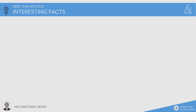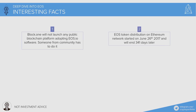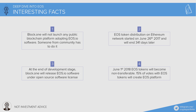Some interesting facts from the EOS FAQ. Block.one will not launch any public blockchain platform adopting EOS software — someone from the community has to do it. EOS token distribution on the Ethereum network started on June 26, 2017 and will end 341 days later. At the end of the development stage, Block.one will release EOS software under an open source license. On June 1, 2018, EOS tokens will become non-transferable, and 15% of votes with EOS tokens will be needed to create the EOS platform.